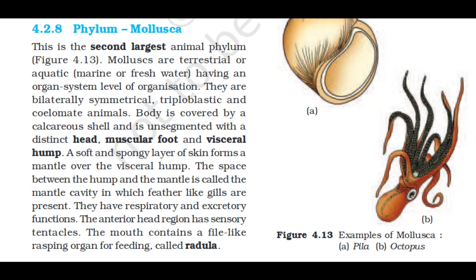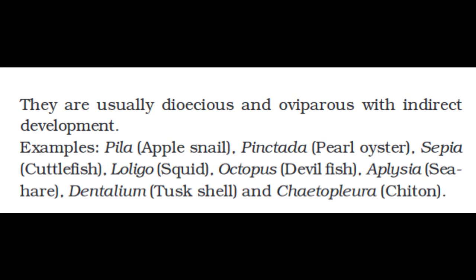Section 4.2.8: Phylum Mollusca. This is the second largest animal phylum. Molluscs are terrestrial, aquatic (marine or freshwater), with organ system level of organization. They are bilaterally symmetrical, triploblastic, and coelomate animals. The body is covered by a calcareous shell and is unsegmented with a distinct head, muscular foot, and visceral hump. A soft and spongy layer of skin forms a mantle over the visceral hump. The space between the hump and mantle is called the mantle cavity, in which feather-like gills are present. They have respiratory and excretory functions. The anterior head region has sensory tentacles. The mouth contains a file-like rasping organ for feeding called radula. They are usually dioecious and oviparous with indirect development. Examples: Pila (apple snail), Pinctada (pearl oyster), Sepia (cuttlefish), Loligo (squid), Octopus (devil fish), Aplysia (sea hare), Dentalium (tusk shell), and Chiton.